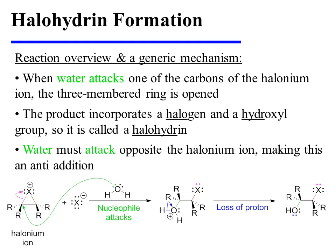There are now two nucleophiles in the system, and we must decide which one will attack the halonium ion. Both the halide and water are nucleophilic. However, when water is the solvent, it is present in much greater abundance than the halide, and therefore it is simply more likely that it will encounter the halonium ion. As a result, water attacks one of the two carbons of the halonium ion, thereby breaking open the three-membered ring. The oxonium ion that results will lose a proton to the medium, and the ultimate reaction product incorporates both a halogen and a hydroxyl group — hence the name halohydrin.